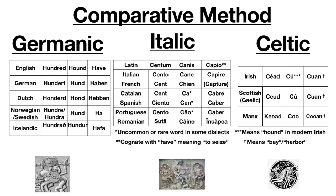The Romanian word for hundred — sută — looks somewhat similar to the Latin word, but it doesn't come from Latin. It does come from Indo-European, but it comes from a Slavic source. That's a 'satem' version of the word for hundred — which is why I highlighted it, because it's slightly different.